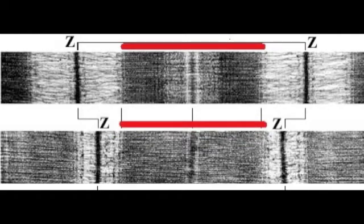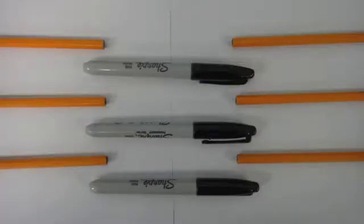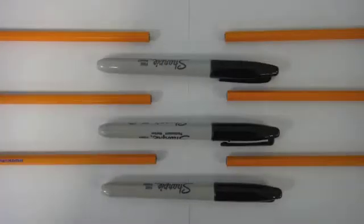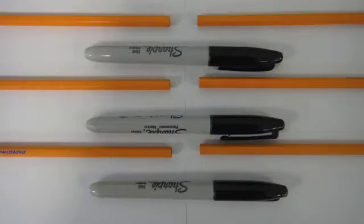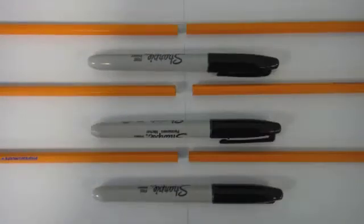When we compare the relaxed sarcomere at the top with the contracted sarcomere at the bottom, we can see that the dark band, the width of which is represented by the length of the myosin filaments, does not change between them. This is because the actin and myosin filaments have only slid past one another during contraction but have not actually changed length.